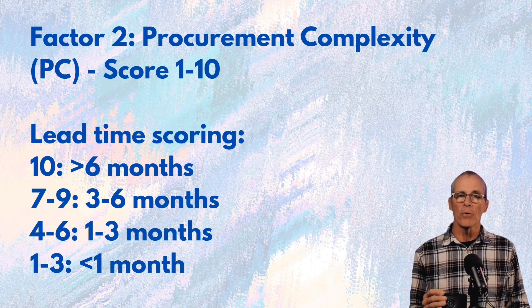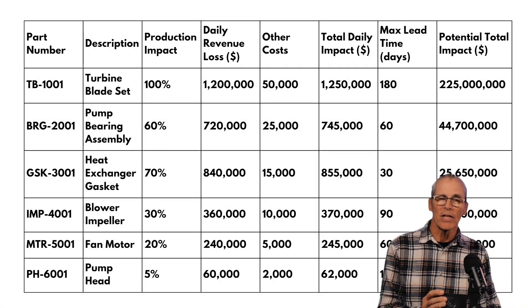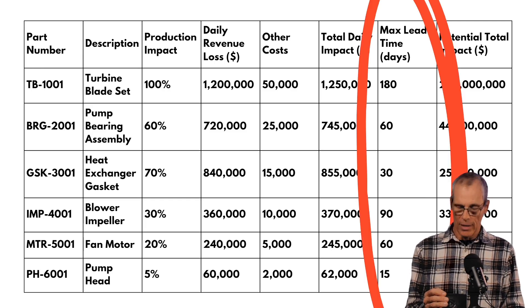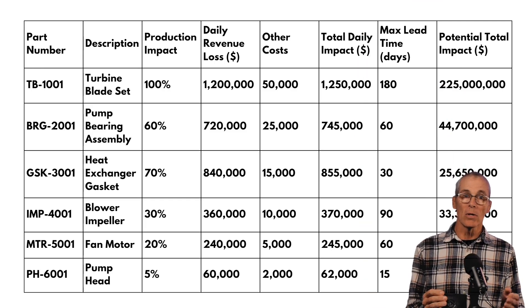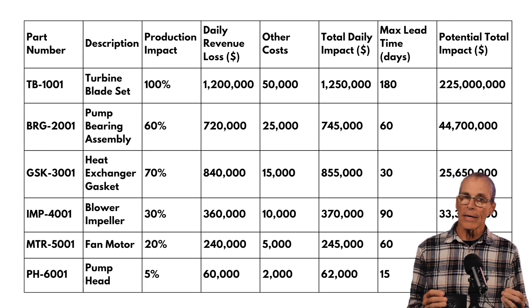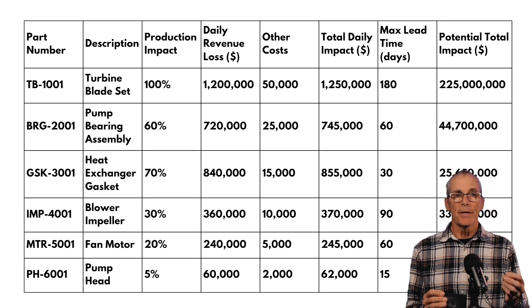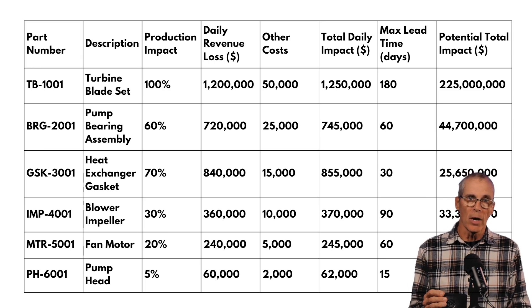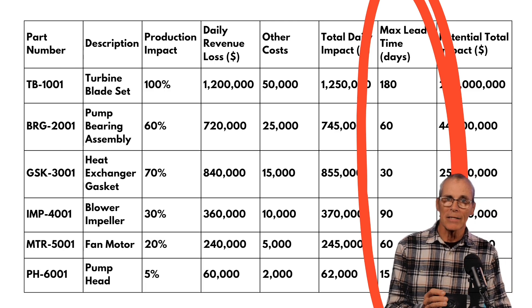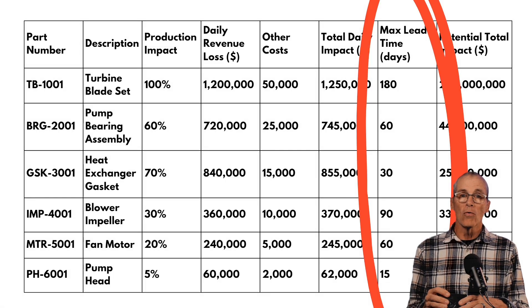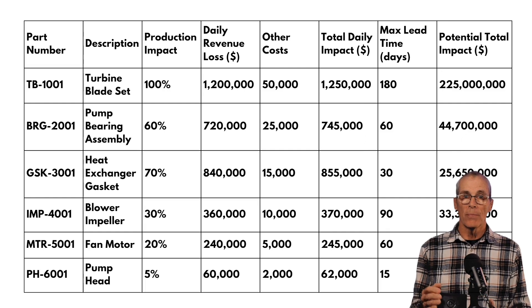Less than a month, score it one to three. Here's what that chart would look like. I want you to focus on the max lead time column. We're going to look at the part number, its description, what production impact it would have if it failed, the daily loss revenue, other costs associated, maybe the in-and-out cost type, the total impact, and then the max lead time, because that's what's going to drive the overall potential impact.